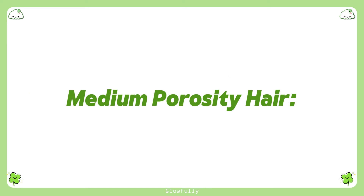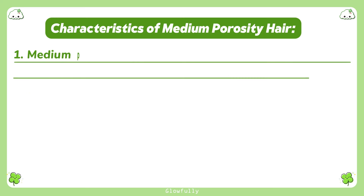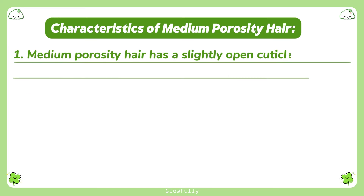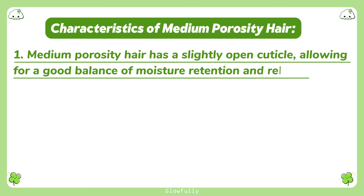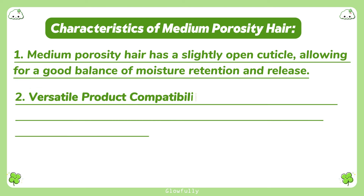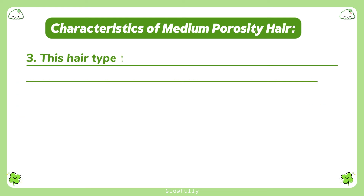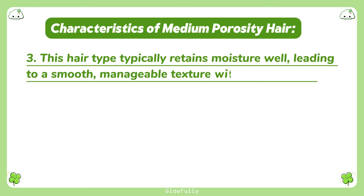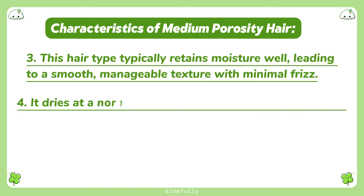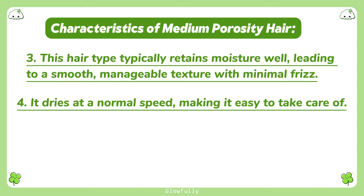Medium porosity hair characteristics: medium porosity hair has a slightly open cuticle, allowing for a good balance of moisture retention and release. It has versatile product compatibility and can handle a variety of products and treatments, including both protein and moisture-rich formulas. This hair type typically retains moisture well, leading to a smooth, manageable texture with minimal frizz. It dries at a normal speed, making it easy to take care of.